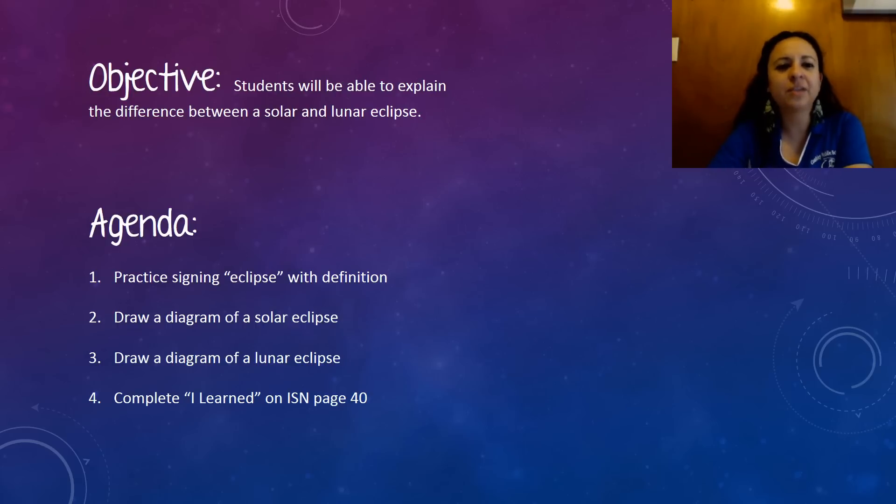In these videos there's going to be an objective and there's also going to be an agenda just to let you know what we're going to do throughout the whole video. The objective of today is so that you can explain the difference between a solar and lunar eclipse. First, we're going to practice signing eclipse with definition. We're going to draw a diagram of the solar eclipse and draw a diagram of the lunar eclipse. And then at the very end, you'll have some time to complete an ILEARN page on your page 40 of the ISN.